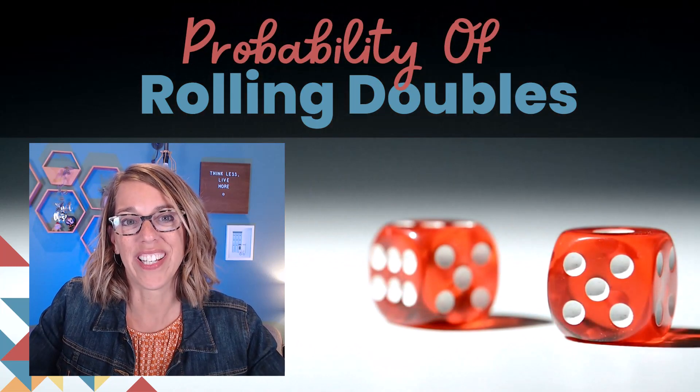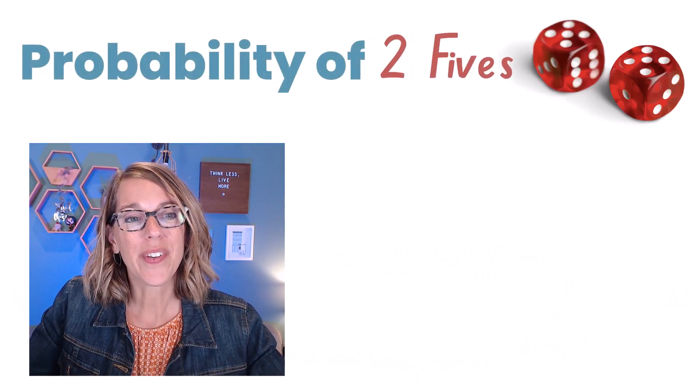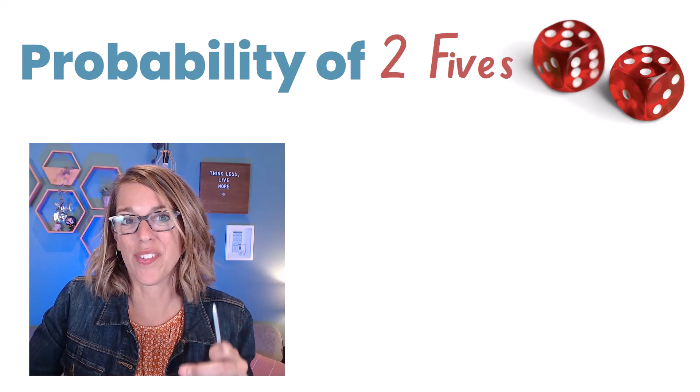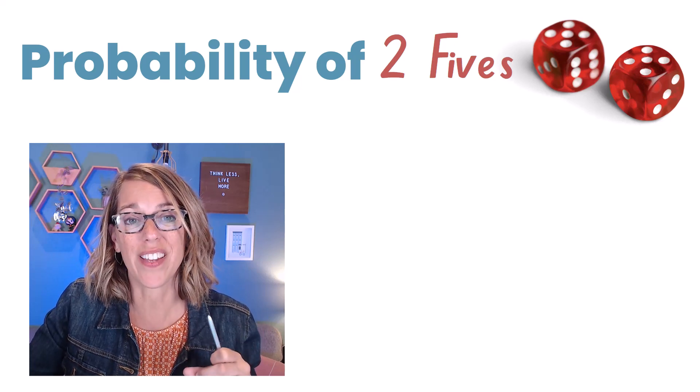Let's find the probability of rolling doubles. Now, as we're doing this, we're going to start simple and do the probability of getting two fives instead.